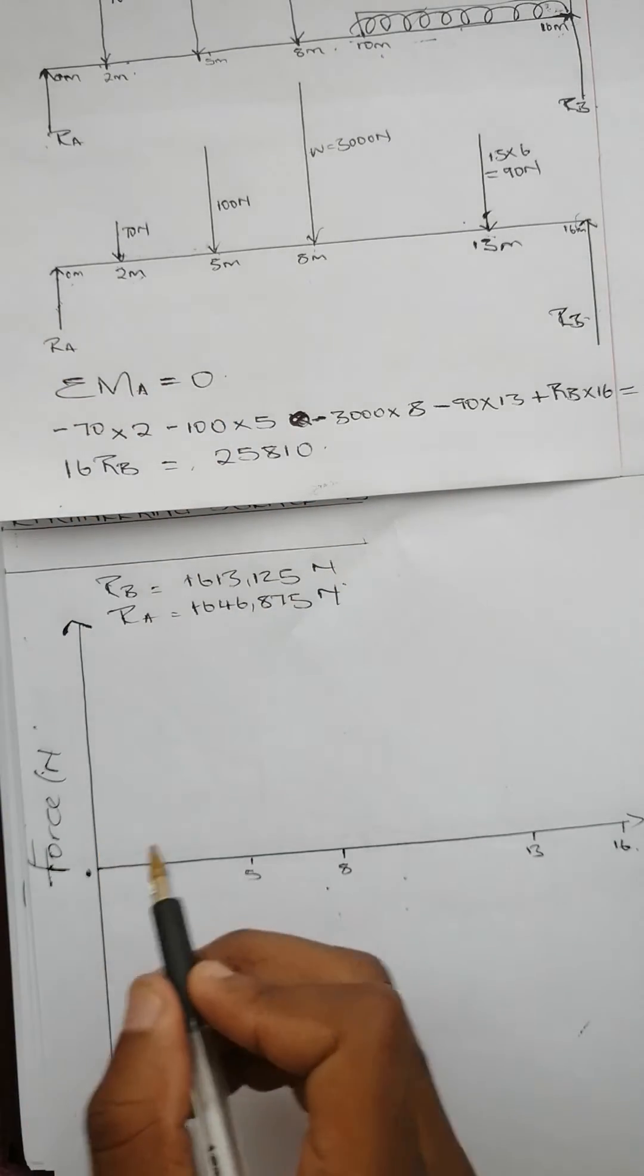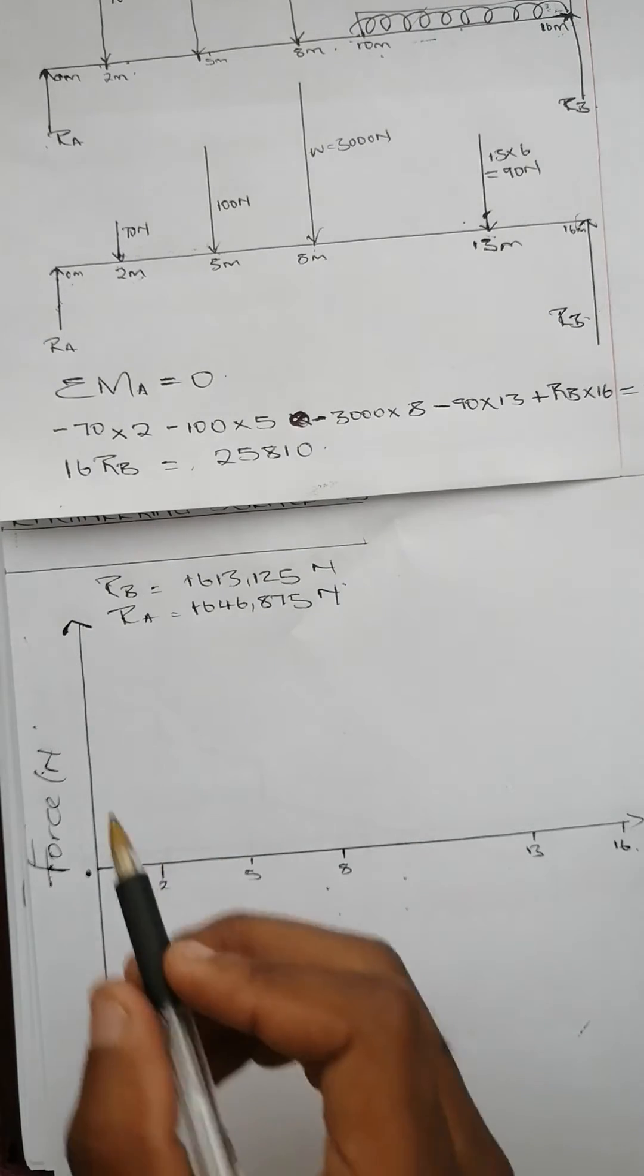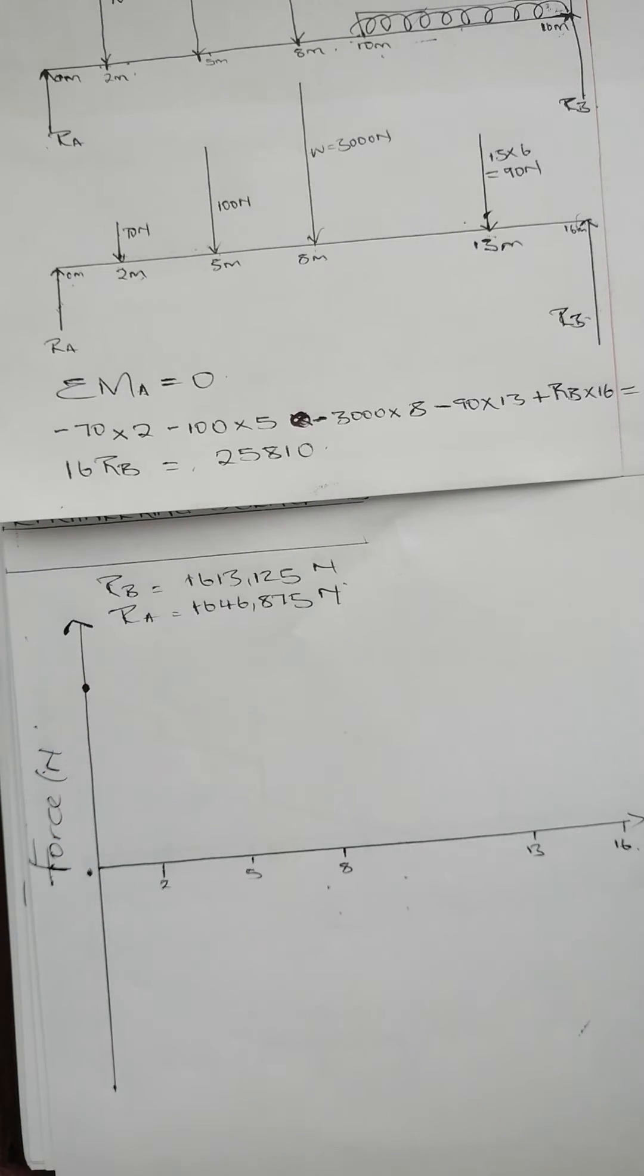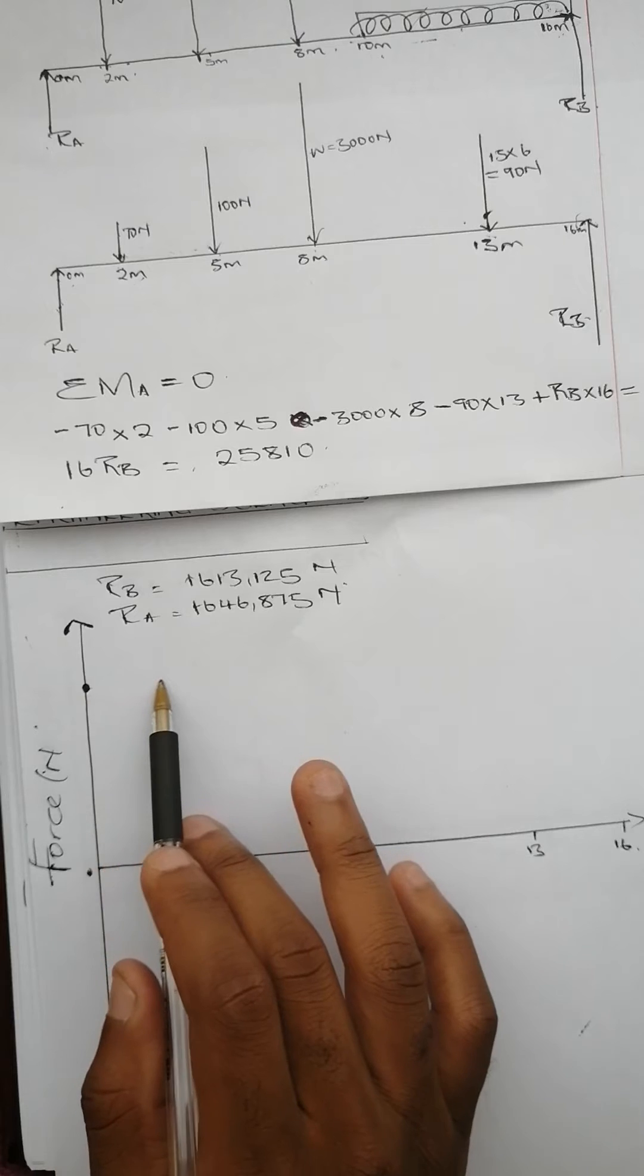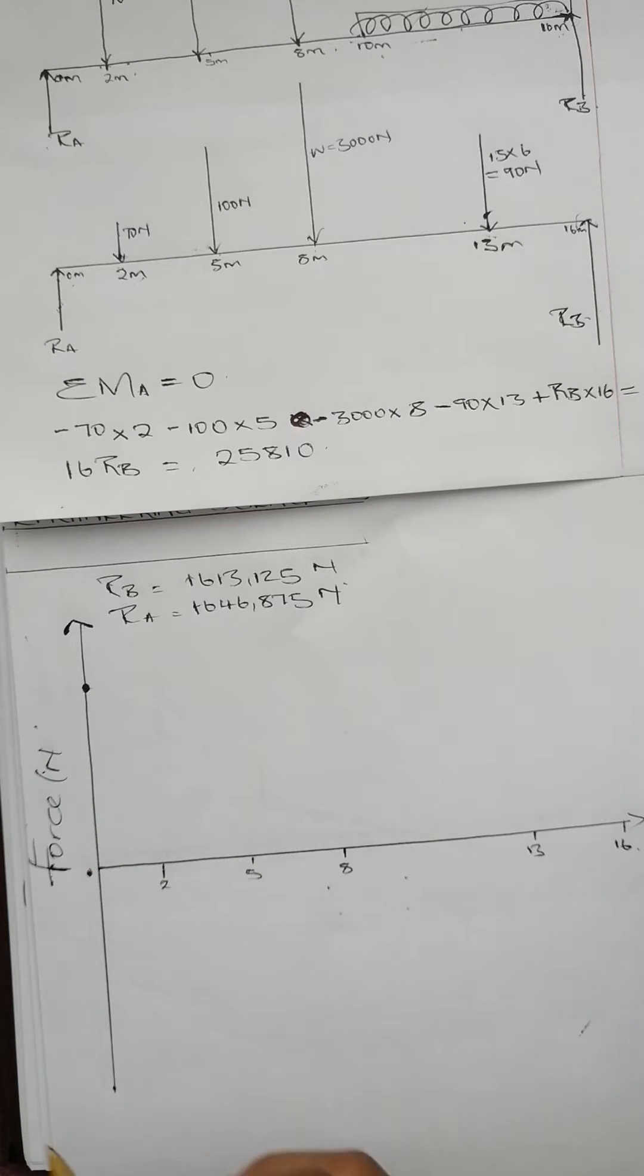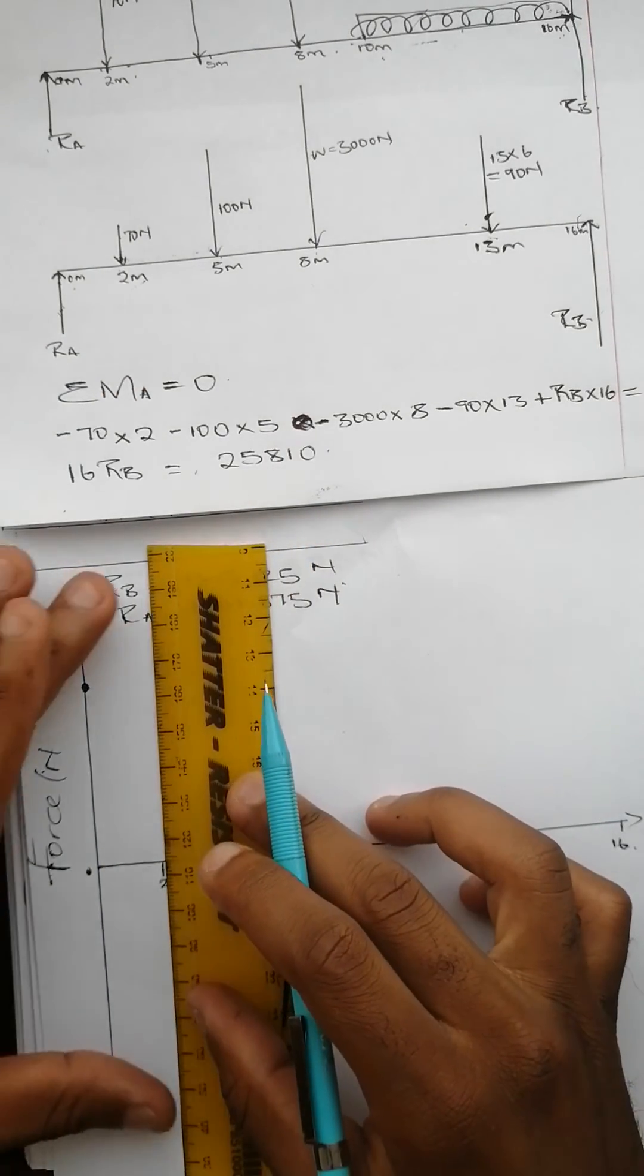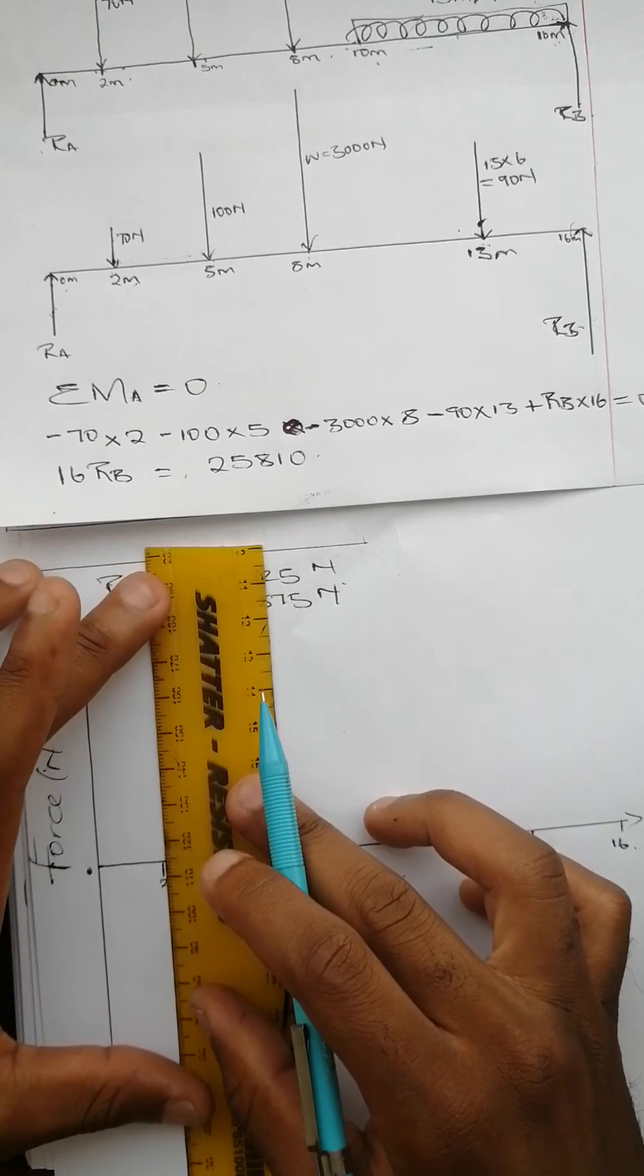At zero we have reaction A which is 1646.875, we're going to mark it over here. We have a distributed load throughout the beam which is the weight. So our shear force diagram is not going to be horizontal, it's going to slant due to that distributed load.